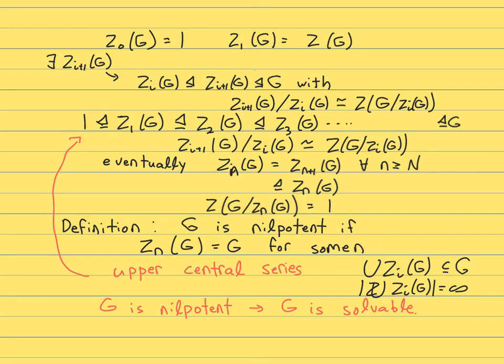The smallest n for which this statement is true for a nilpotent group, the smallest n for which Z_n is equal to G is called the nilpotency class. And for the rest of the lectures, it's usually denoted with the number C.